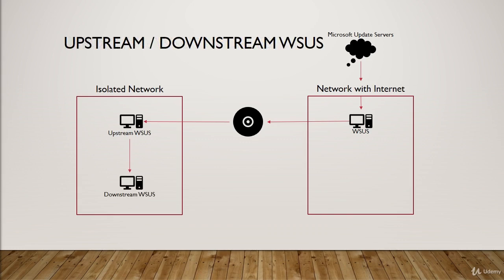An example of an upstream and downstream WSUS server doesn't even have to be a network that's disconnected from the internet — it's simply a scenario where a WSUS server is retrieving updates from another WSUS server. The downstream server on the left-hand side is accepting, or pulling, its updates from the upstream server.